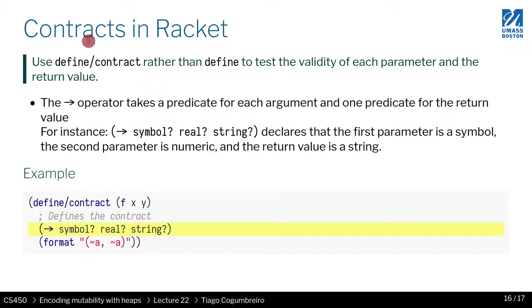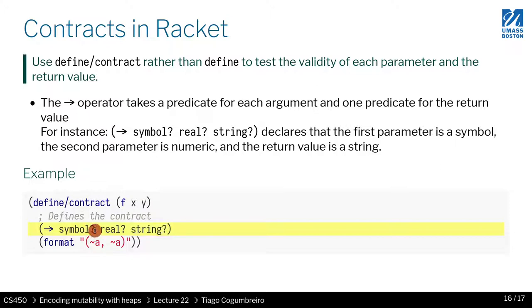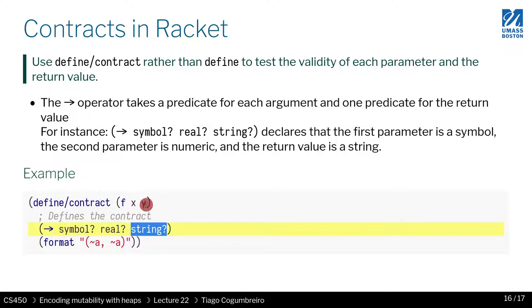Let's look at how contracts are defined in Racket. Instead of define, you use define/contract. There's this little arrow here, and with the arrow, all of the listed functions will be called for the parameters, and then the last one is called for the return value. If you squint your eyes, you will just see types: the first parameter has to be a symbol, the second parameter has to be real, and the result has to be a string. So whenever your code calls F, it has to ensure that X is a symbol and Y is a real, and it can assume that the result of F is going to be a string.